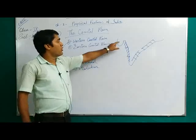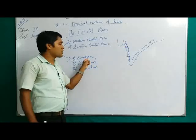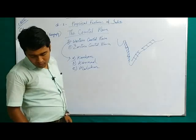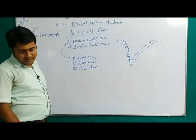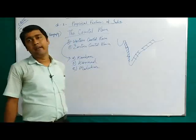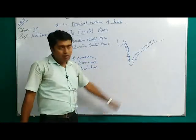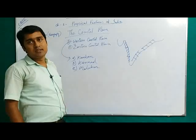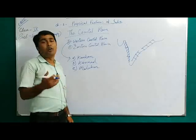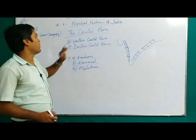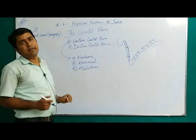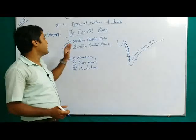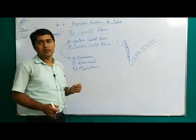The northern part of the western coast is called Malabar. Students, up to this point you will read today. Next day we will start the Eastern Coastal Plain and the rest of this chapter. Thank you.